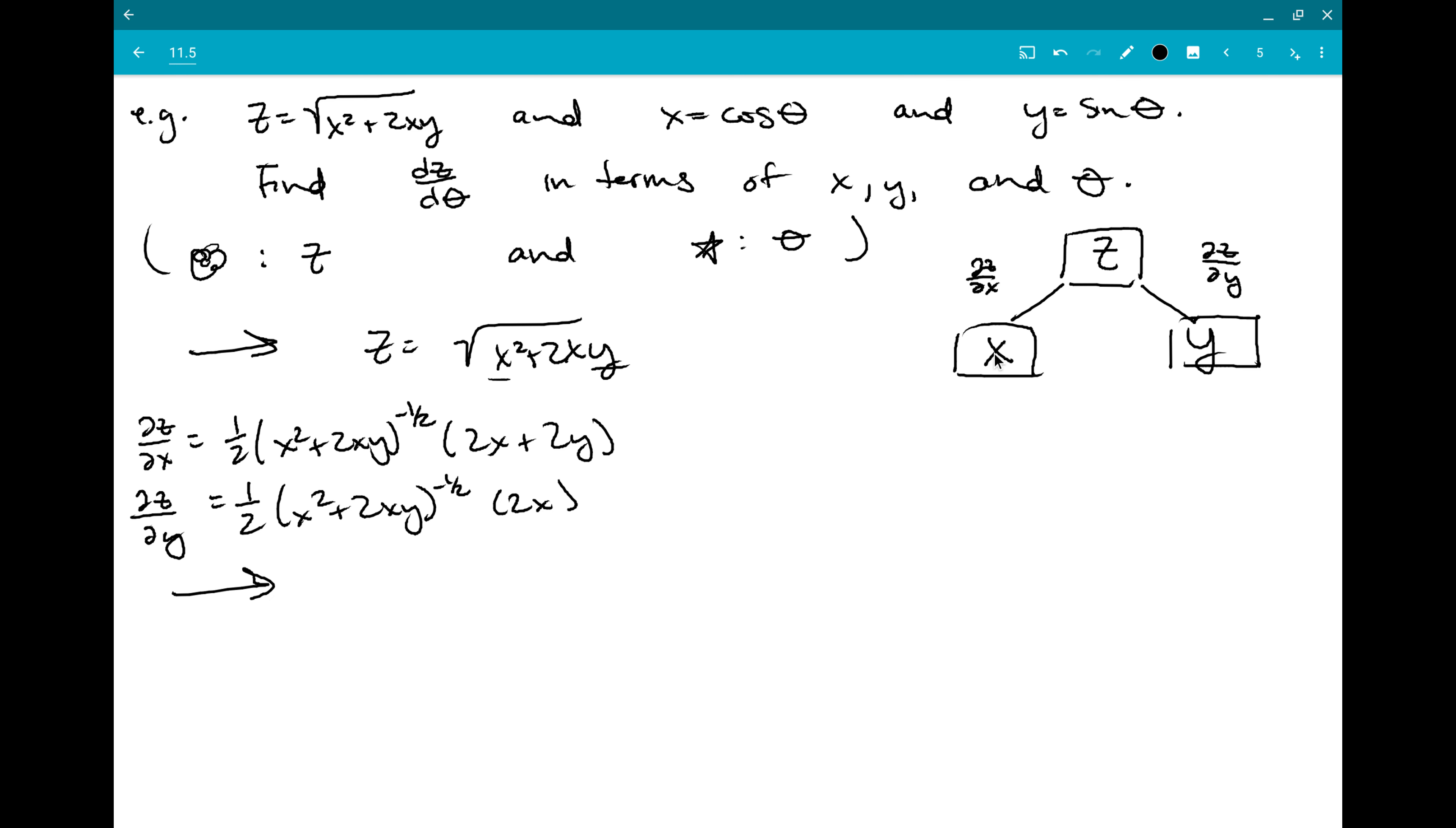And then at my next layer, I look at everything that x and y depend on. So x equals cosine theta. And y equals sine theta. So I can see that x depends on theta. So I should put a theta down here. And y depends on theta.